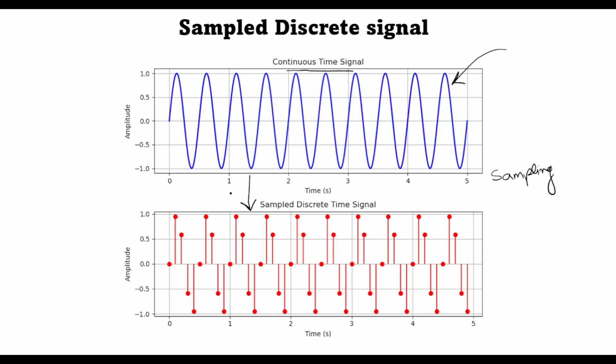But for efficient implementation in digital signal processors, we want the signal to be a discrete sequence. For example, a digital autopilot can work on discrete sequences of the aircraft velocity and position. So the signal is actually sampled and converted into a discrete time sequence, which then can be implemented in a digital signal processor.